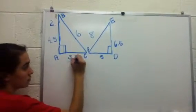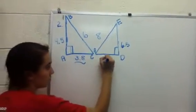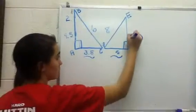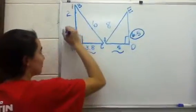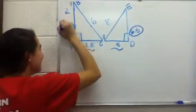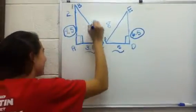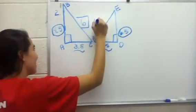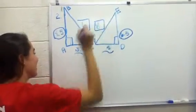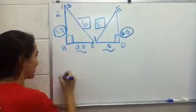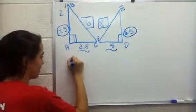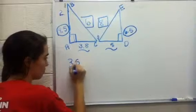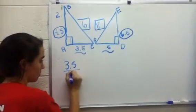First, you're going to see which numbers correspond with each other, circle them, and put squares around the ones that match up. Then you're going to set up your three proportions.